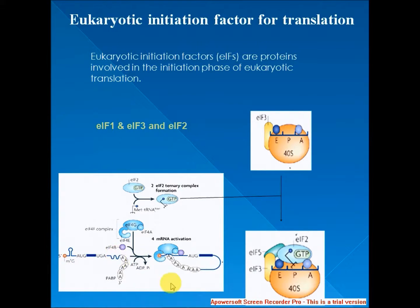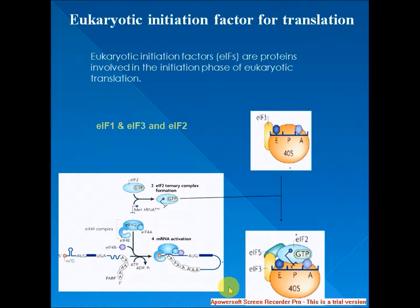The mammalian 17 kDa eukaryotic initiation factor EIF1A, formerly designated EIF4C, is essential for transfer of the initiator met-tRNA-F to the 40S ribosomal subunit in the absence of mRNA to form the 40S pre-initiation complex: 40S·met-tRNA-F·EIF2·GTP. EIF1A acts catalytically in this reaction to mediate highly efficient transfer of the met-tRNA-F·EIF2·GTP ternary complex to 40S ribosomal subunits. The 40S complex formed is free of EIF1A, indicating that its role is not to stabilize the binding of met-tRNA-F to 40S ribosomes.